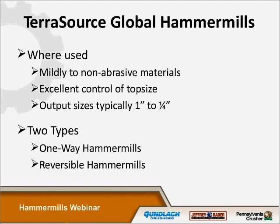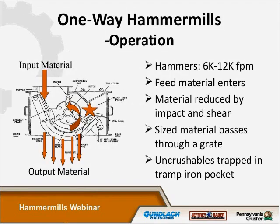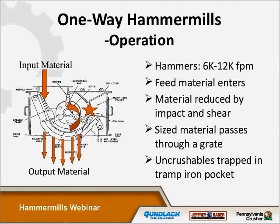I'm going to be talking about one-way machines and reversibles. In a one-way hammer mill, material enters the machine to one side of the rotor assembly onto a breaker plate where impact occurs, and then the material is swept down into the sizing section. Everything must pass through the screens to exit the crusher. There is a tramp iron pocket in the rear of the machine for uncrushable material. Typical hammer tip speeds vary from about 6,000 to 12,000 feet per minute.